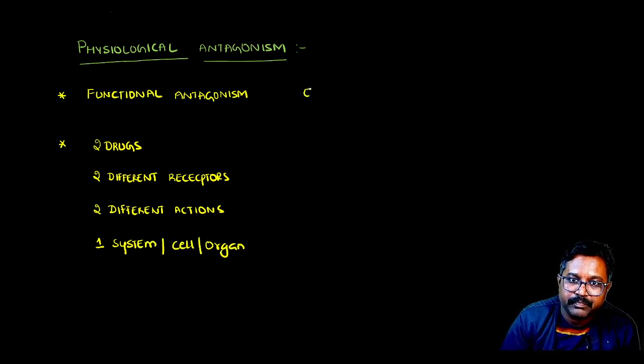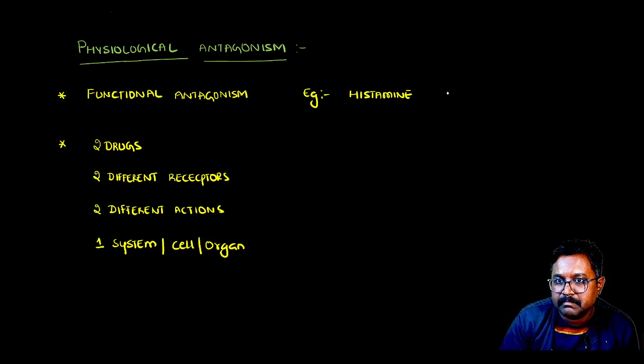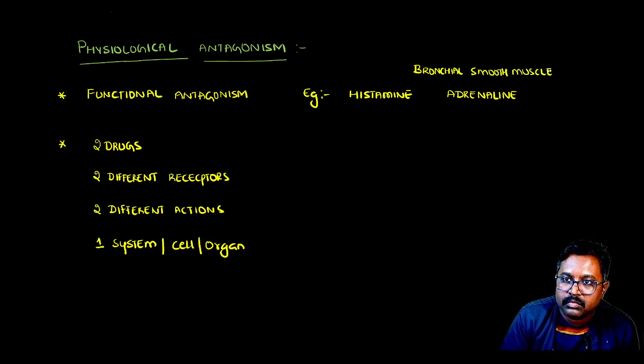What is the example? The classical example is histamine and adrenaline. These two will act on the bronchial smooth muscles.